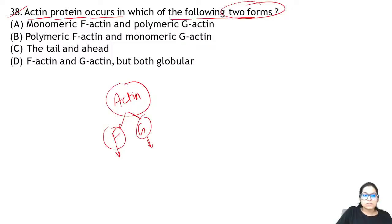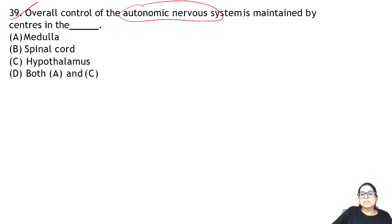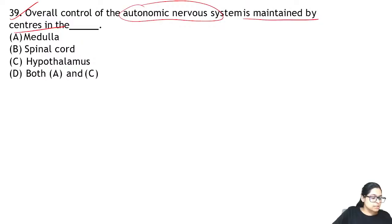Question 39: overall control of the autonomic nervous system is maintained by — both the medulla and the hypothalamus maintain it. Answer for 39 is D.